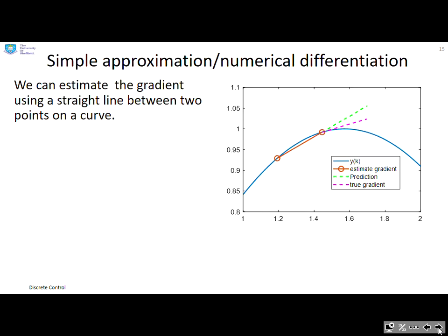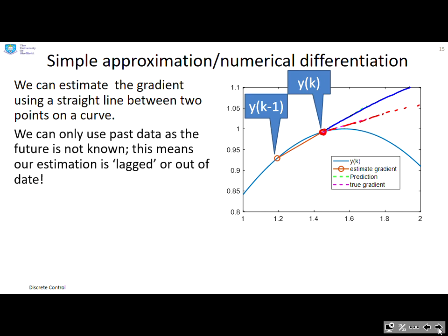So how might we go about this? Well, we start by looking at numerical differentiation, which is what I've shown you here. You can estimate the gradient using a straight line between two points on a curve. So you can see here I've taken the point y_{k-1} and the point y_k and I've estimated the gradient as this dotted green line here—that's my estimate. However, what you will realize is the true gradient at the point y_k is this line here, so actually you're quite a long way out. And what's the problem? We can only use past data in control systems. We can't see the future. This bit's not known. So we can only use past data to estimate the gradient, and therefore estimation is lagged or slightly out of date.